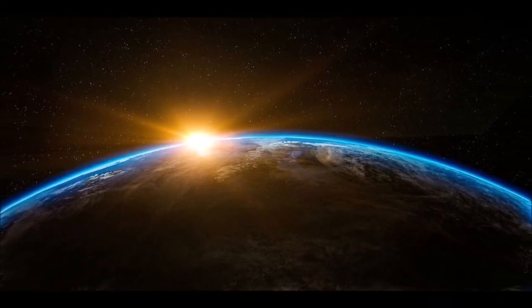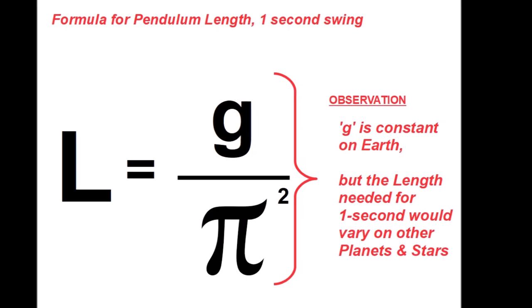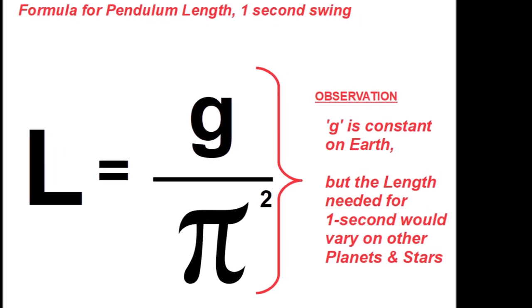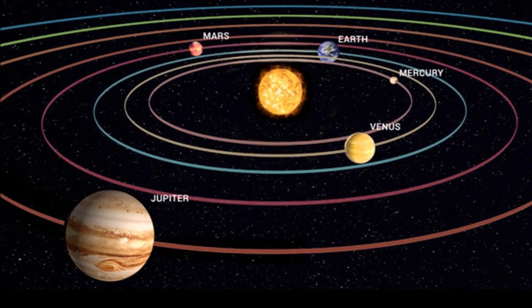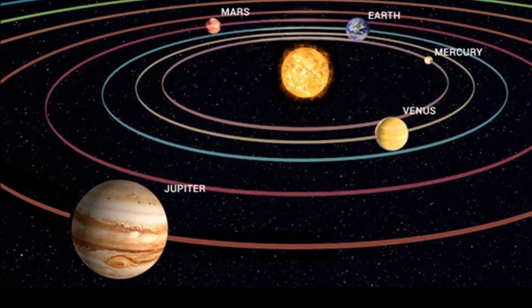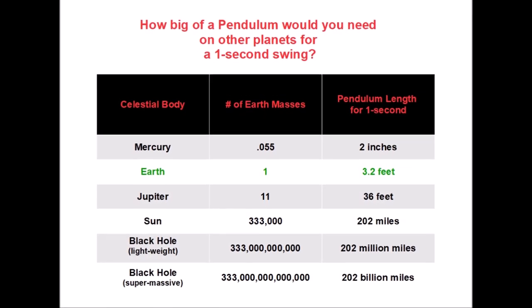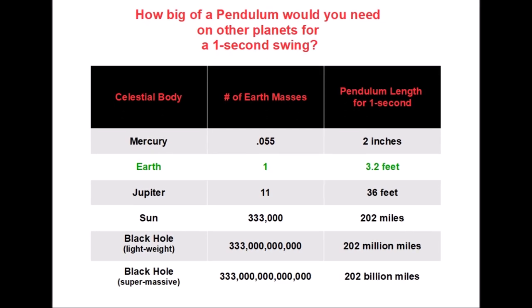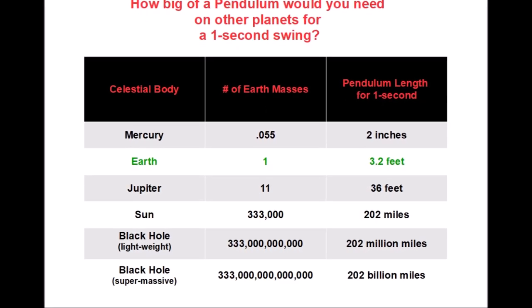But what happens when you have a different g on a planet or on a star? If we wanted to produce a one second swing on Jupiter, for example, we would need a 36 foot pendulum. Or on a black hole, a pendulum of 202 million miles long. Conversely,